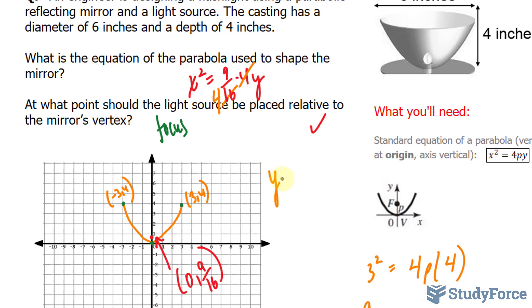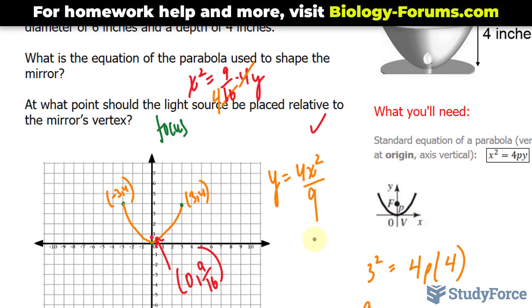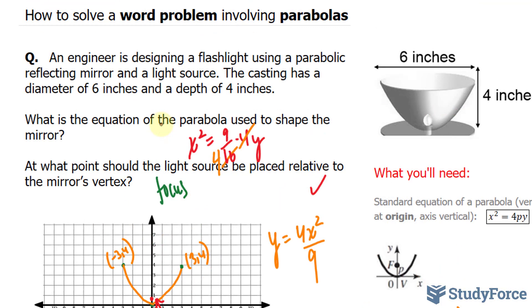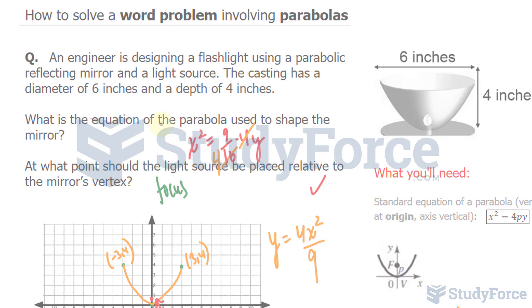And so you'll have y equals, multiplying both sides by 4, 4x² over 9. That equation represents this problem. And there you have it. That is how to solve a simple word problem involving parabolas.